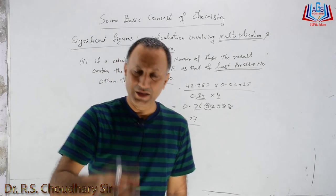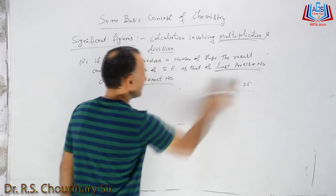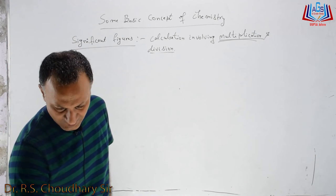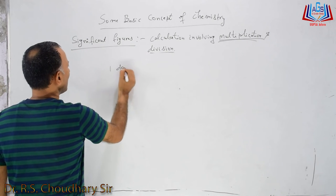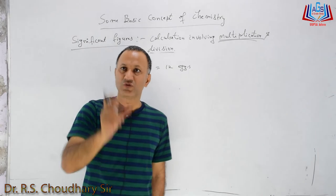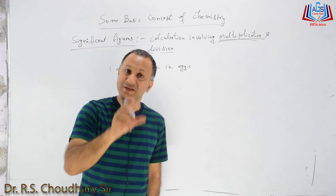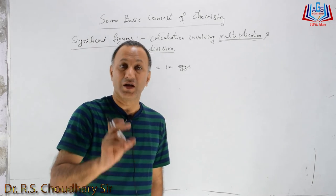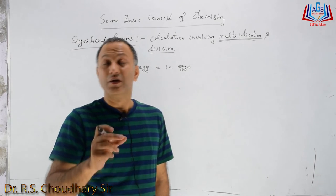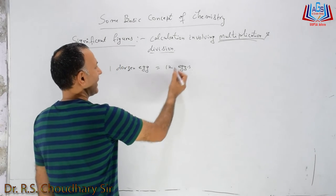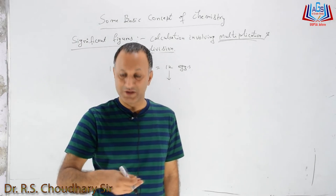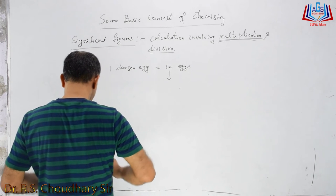If the value is exact, the significant figures rules are not applicable. For example, 1 dozen eggs equals 12 eggs. 12 is an exact number, so significance rules do not apply. If you ask how many significant figures 12 has, it is an infinite number of significant figures, because it is an exact number.